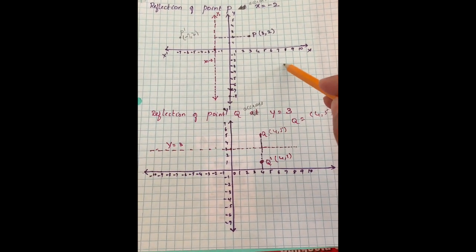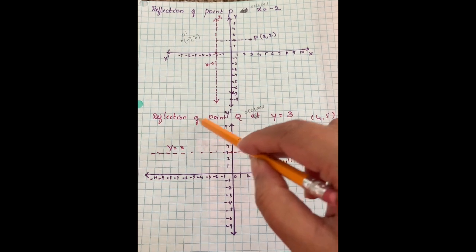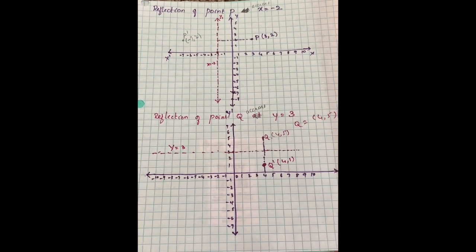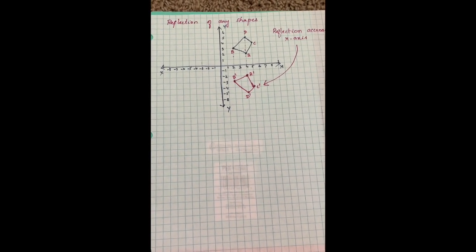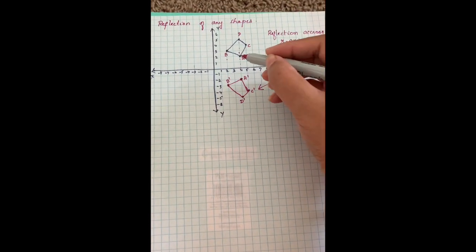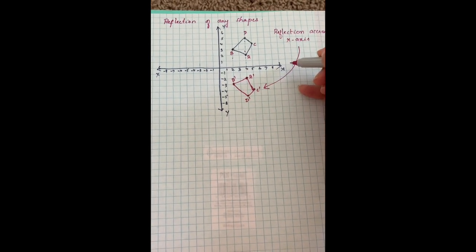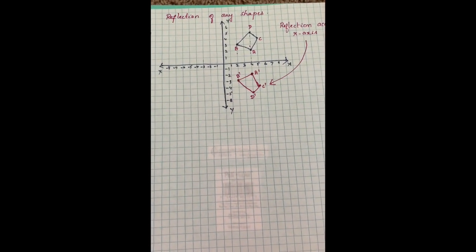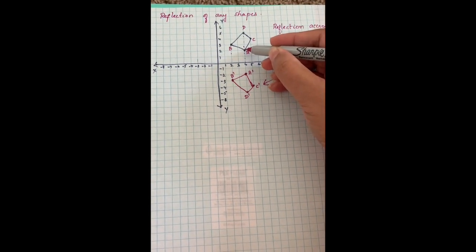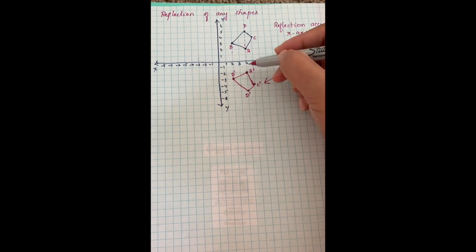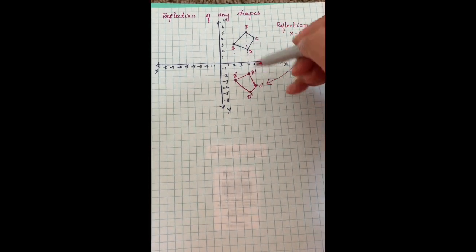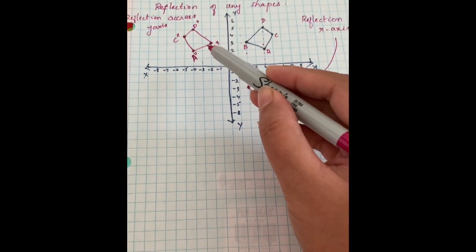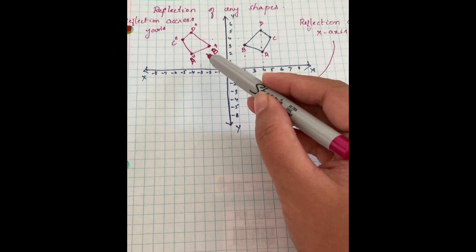To find the reflection of any shape across the x-axis, take the x-axis as the baseline. For each vertex of the polygon — A, B, C, D — find its reflection as A prime, B prime, C prime, and D prime respectively by mirroring the same distance across the axis. The same procedure applies when reflecting the shape across the y-axis.